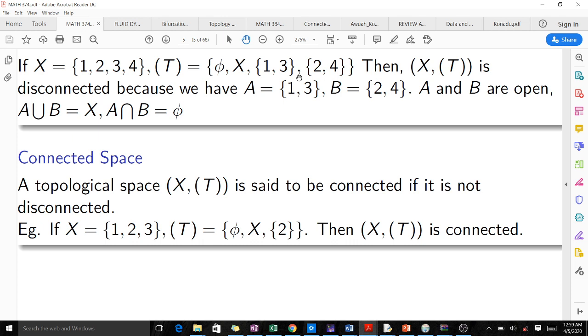But the union of this will give us {1, 2, 3, 4} which is equal to X. So we see this topological space is not connected, and if this topological space is not connected then it is disconnected.